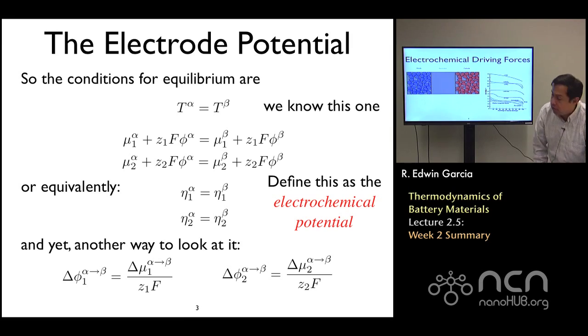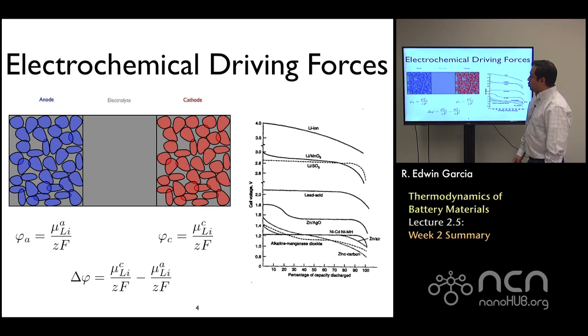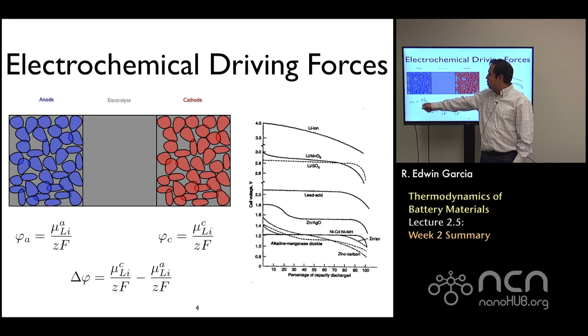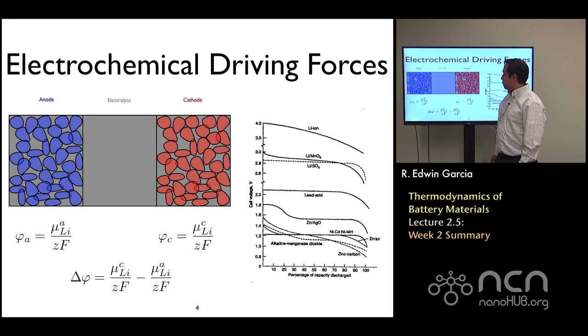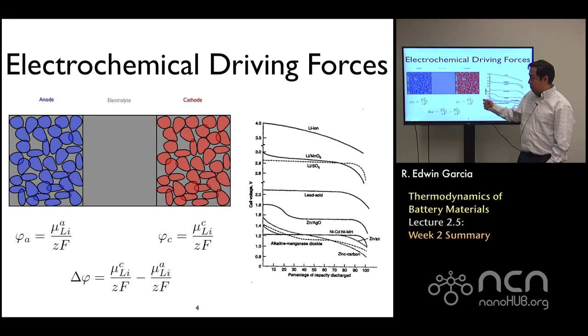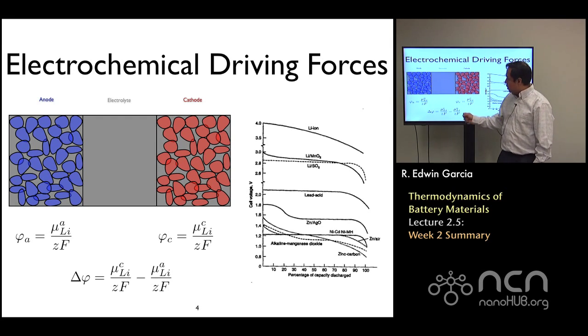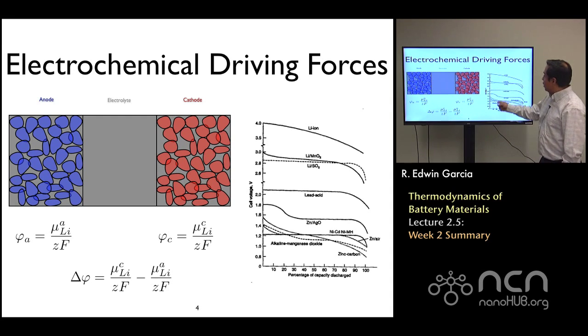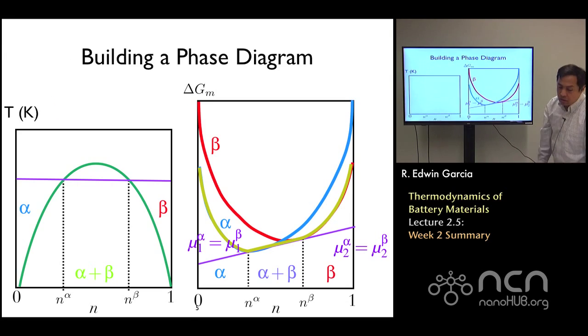And we use that given a common reference, we can use that to specify the voltage of, say, the anode with respect to some reference phase. And similarly, by using the same reference, the voltage of that cathode material with respect to the same reference, the voltage of the cell will be the difference between both of them, leading to this composition-dependent response of the battery, which we found was specified by resorting to concepts of thermodynamics of mixing.